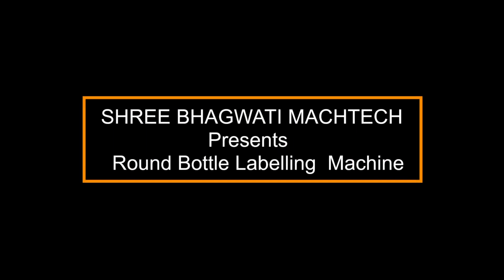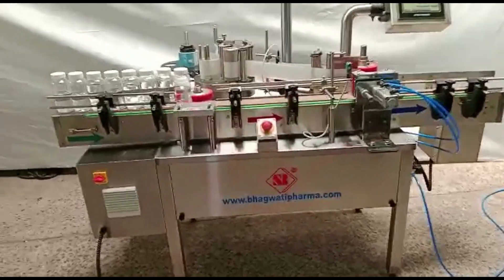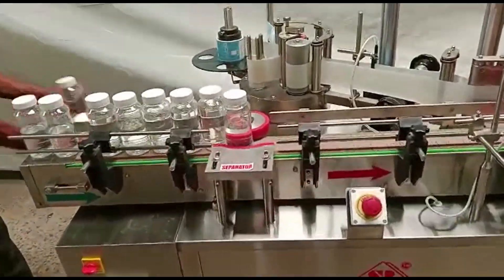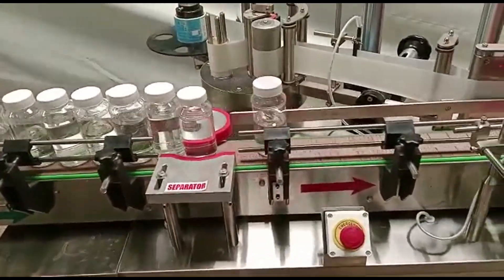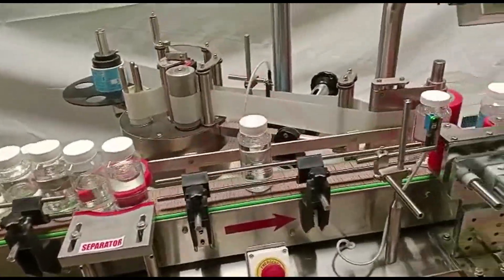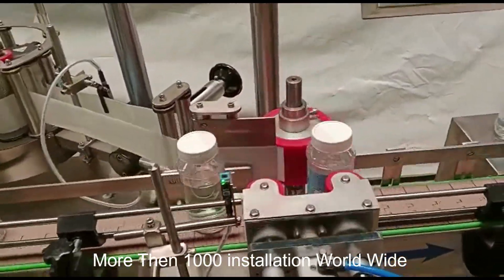Sri Bhagwati presents Round Bottle Labeling Machine. A round bottle labeling machine is a specialized piece of equipment used in industries such as pharmaceuticals, cosmetics, food and beverages, and others, where products are packaged in round bottles or containers.